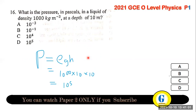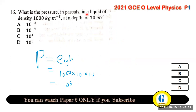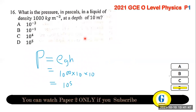Question 16: what is the pressure in pascals in a liquid of density 1000 kg/m³ at a depth of 10 m? Pressure in liquids = density × gravity × height = 1000 × 10 × 10 = 10⁵ pascals.